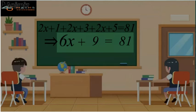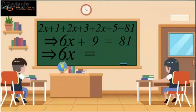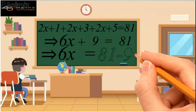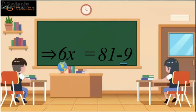Now we are familiar with the solution of a linear equation. First, we will transfer the constant on the left-hand side to the right, that is 9 from left-hand side to the right-hand side, and we will subtract 9 from 81, which gives 72.